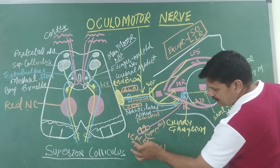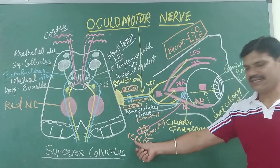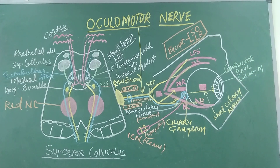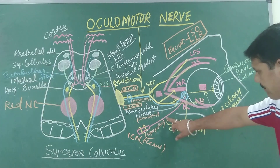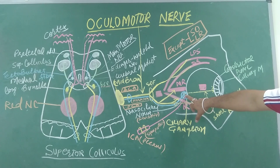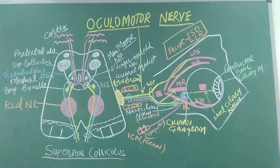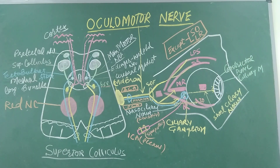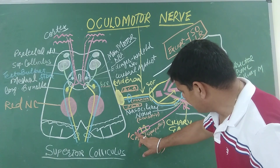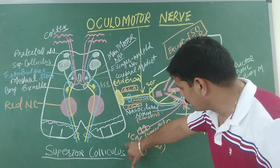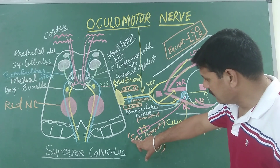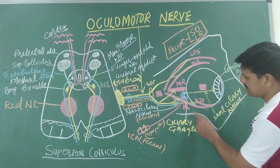The sympathetic root travels through the internal carotid plexus. The internal carotid plexus contains post-ganglionic fibers to the ciliary ganglion. These fibers arise from the superior cervical ganglion, and the pre-ganglionic fibers reach it through the T1 segment. The post-ganglionic fibers from the internal carotid plexus then reach the ciliary ganglion.